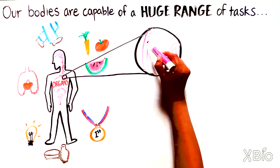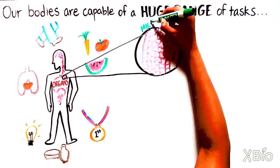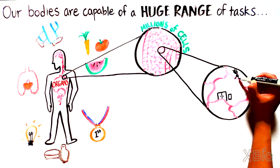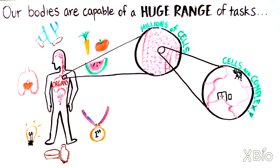Looking closer, we see that each organ is made up of millions of individual cells working together. Looking closer still, we see that cells themselves are quite complex. Every cell is essentially a tiny factory.